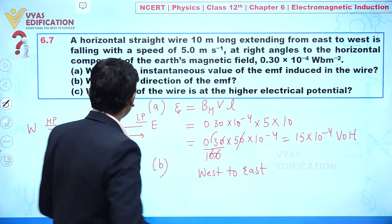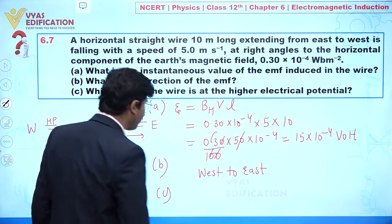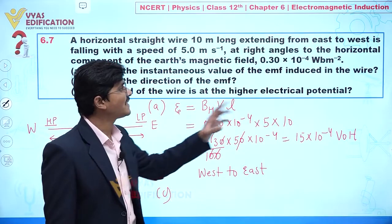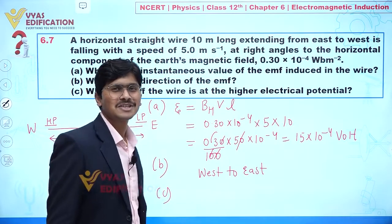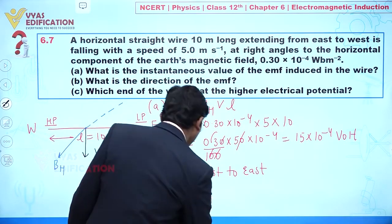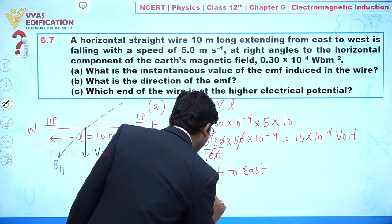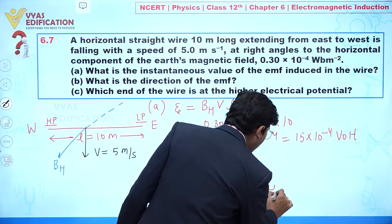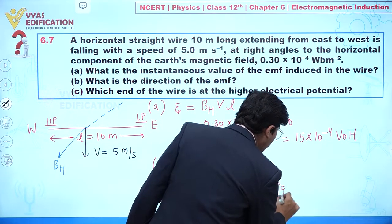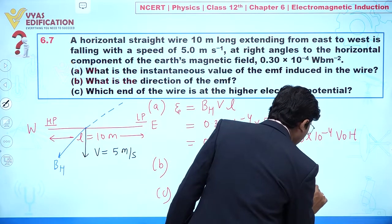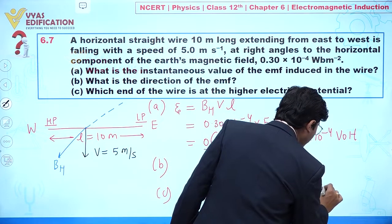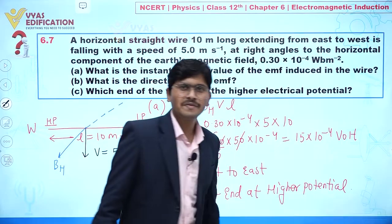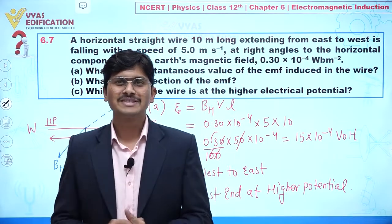For part (c), which end of the wire is at higher electric potential? As determined, the west end is at higher potential. So the answer is: the west end is at higher potential.